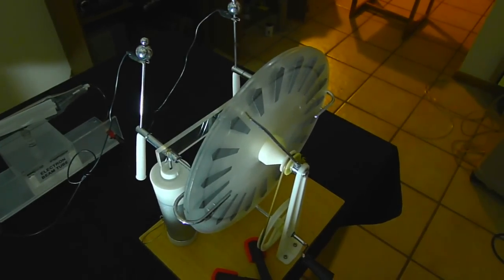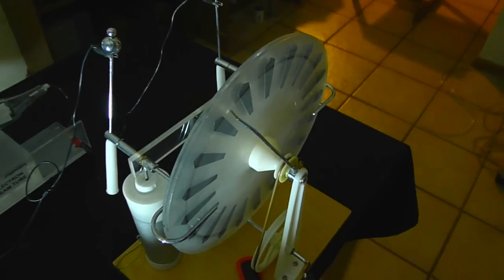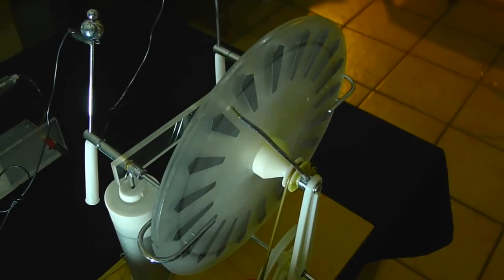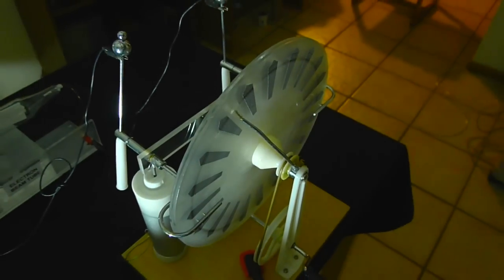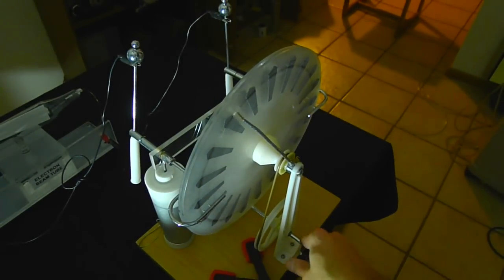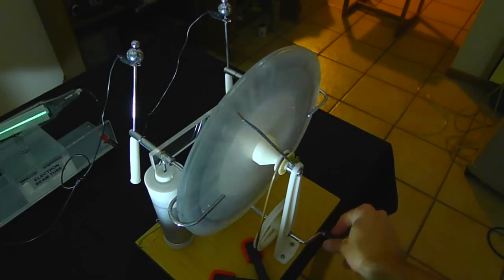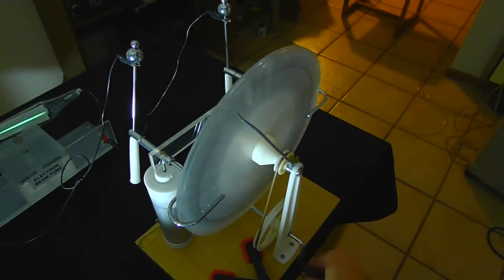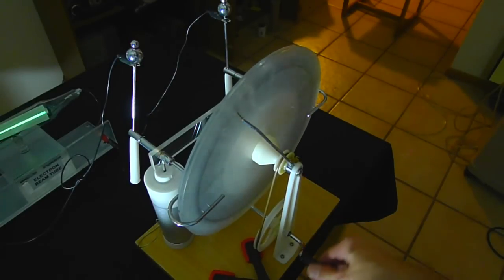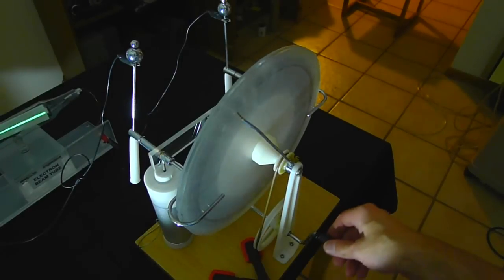Here we have a Wimshurst machine. It's an electrostatic generator based on the principle of electrostatic induction. The power comes from my hand. When I turn this crank with my hand, the machine generates probably about 100,000 volts.